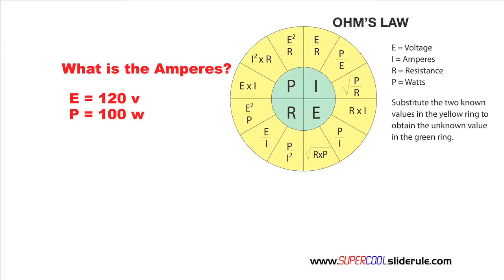We are going to calculate the amps through a 100 watt light bulb connected to 120 volts. Because our known values are voltage and watts, we will use the equation found here.